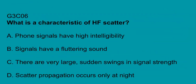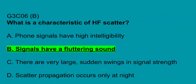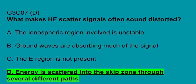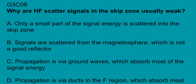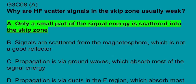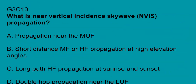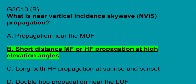G3C06: what is the characteristic of HF scatter? Signals may have a fluttering sound. G3C07: what makes HF scatter signals often sound distorted? Energy is scattered into the skip zone through several different paths. G3C08: why are HF scatter signals in the skip zone usually weak? Only a small part of the signal energy is scattered into the skip zone. G3C09: what type of propagation allows signals to be heard in the transmitting station's skip zone? Scatter. What is near vertical incident sky wave (NVIS) propagation? Short distance MF or HF propagation at high angle or elevation angles.